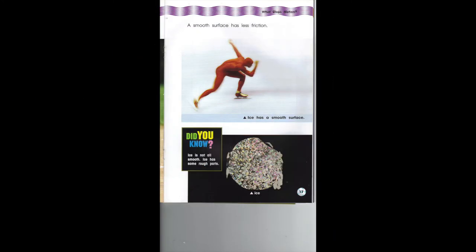A smooth surface has less friction. Ice has a smooth surface. Did you know ice is not all smooth? Ice has some rough parts.